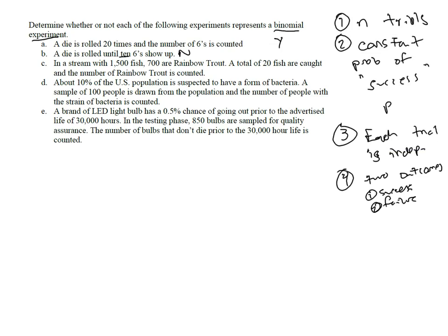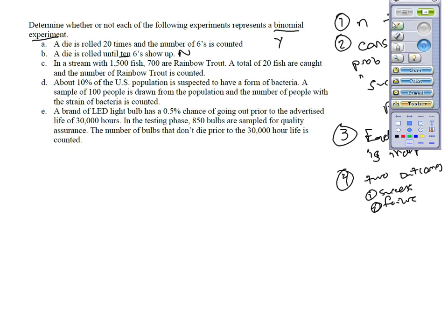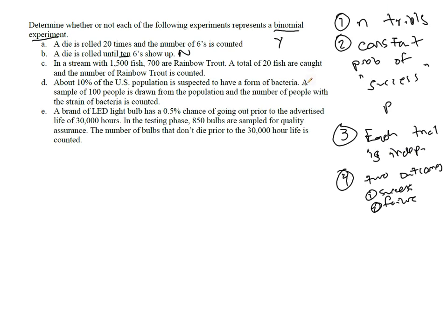In the next one, in a stream with 1,500 fish, 700 rainbow trout, a total of 20 fish are caught, and the number of rainbow trout is counted. Well, there are 1,500 trials—sorry, 20 trials, since 20 fish are going to be caught. The probability of success, however, changes,